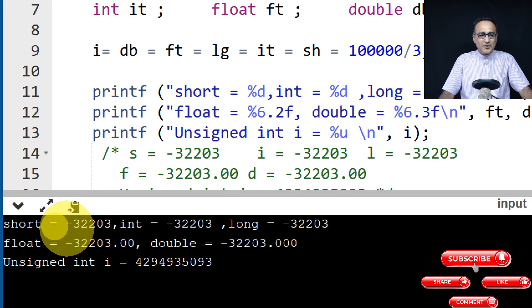So if you happen to see here, what has happened here is if you look at this particular line, when I divide one lakh by three, short has overflowed. That's why it is minus 32,203. That negative value has got copied into int.